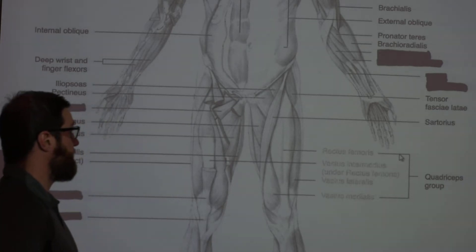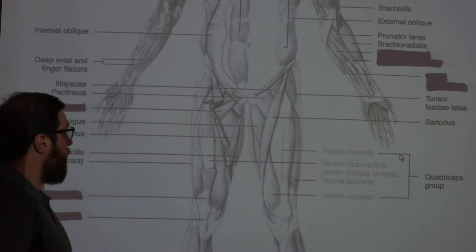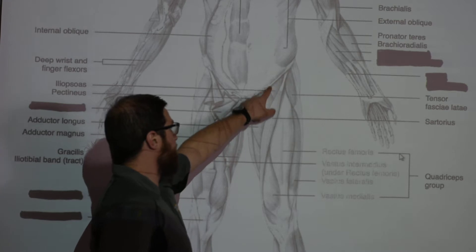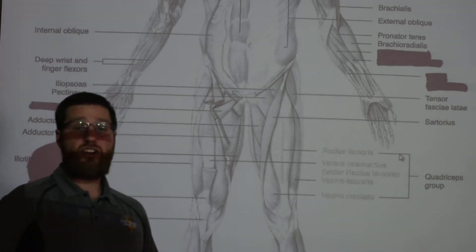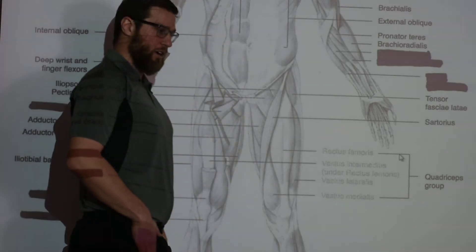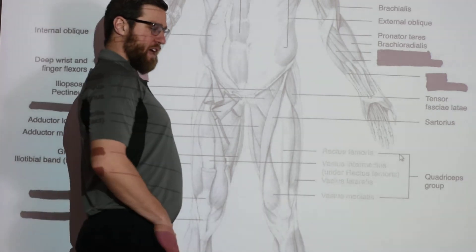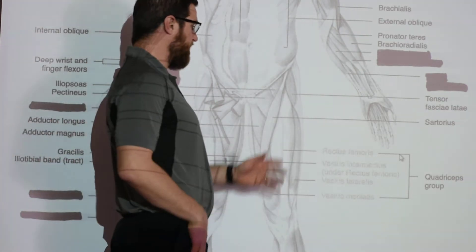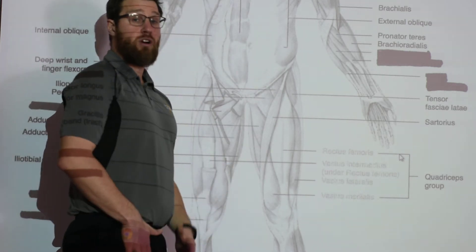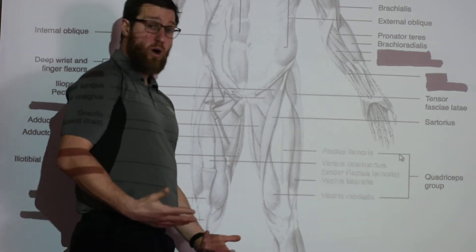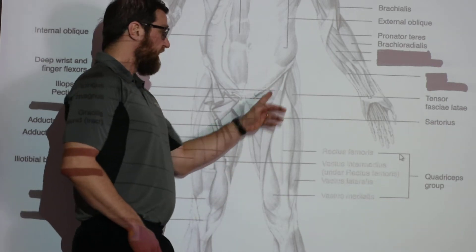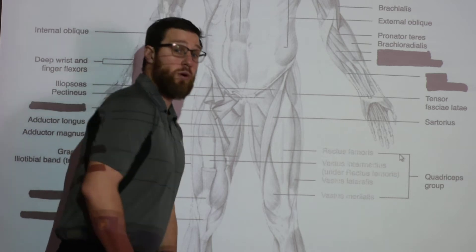Next is your iliopsoas, which is a major hip flexor. When you lift your knee up and flex at the hip — shortening that angle — that's your iliopsoas. It's a prime mover we don't often think about, but we use it constantly when we run and walk. It is a deeper muscle that is really involved in that movement.